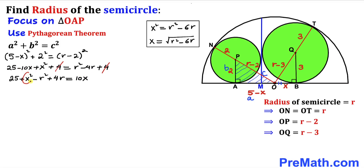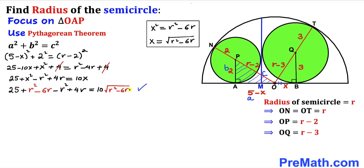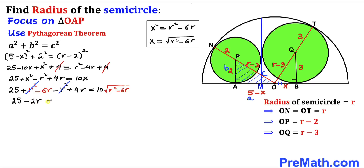Now we substitute x² = r² − 6r and x = √(r² − 6r) into the equation. Replacing x² with r² − 6r, the r² terms cancel, giving 25 on the left side. Combining like terms with 4r and −6r, we arrive at 25 − 2r = 10√(r² − 6r).